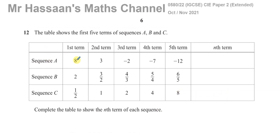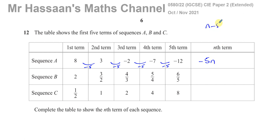For sequence A, you're going from 8 to 3 to −2 to −7 to −12. Every time you're going down by 5 units. Because it's a constant decrease of 5, it's got something to do with the minus 5 times table. So you write −5n. You don't say n − 5; you say −5 times n. If it's going up or down by a certain number, that number is the multiple of n.